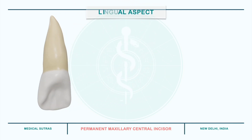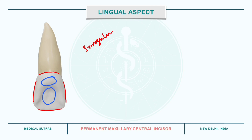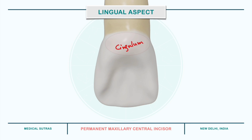Now coming to the lingual aspect. The lingual surface is more irregular and has both concavity and convexity. The mesial, distal, incisal, and cervical outlines are similar to those seen from the labial aspect. However, it presents important features such as the cingulum, lingual fossa, mesial marginal ridge, and distal marginal ridge. The cingulum is found on the cervical third of the lingual surface and develops from the lingual developmental lobe.